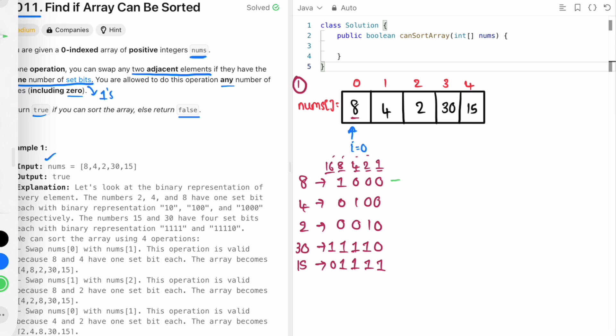Inside this the number of set bits are equal to 1, and inside this the number of set bits are equal to 1. Inside this the number of set bits are equal to 4, and here also the number of set bits are equal to 4. So if you want to swap two elements these set bits should be equal. For example, these two have the same set bits so these two can be swapped.